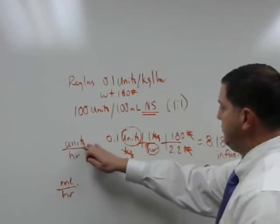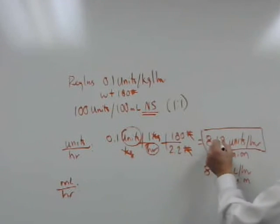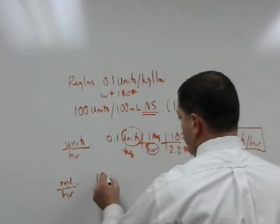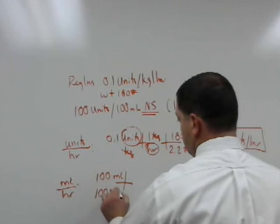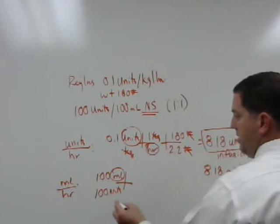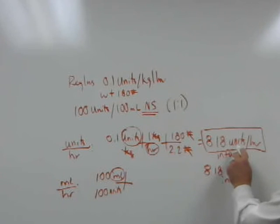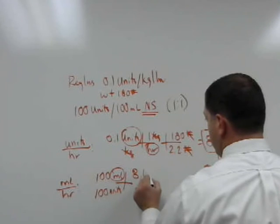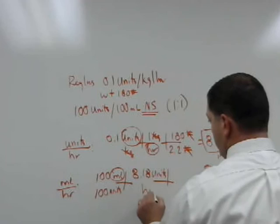Now that I've solved the units per hour, I'll take this answer here, and I'll need that in order to solve for ml's per hour. For ml's per hour, I have 100 ml's in 100 units, so I already have my top descriptor, but I still need hours.